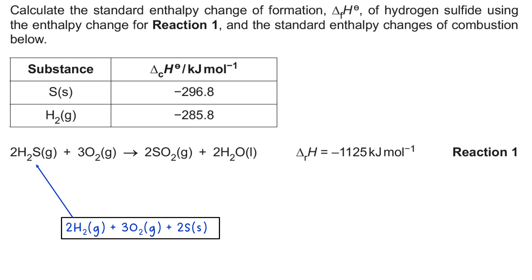If we think about what the enthalpy change of formation of hydrogen sulfide would look like in a Hess's Law cycle, you would have something like this with the elements at the bottom in their standard states in the right mole ratios, and obviously that would be 2 times ΔfH.